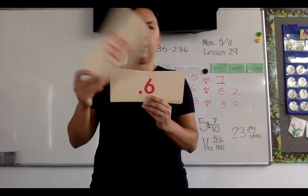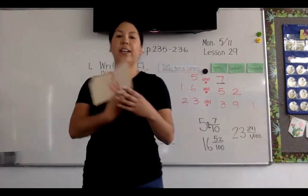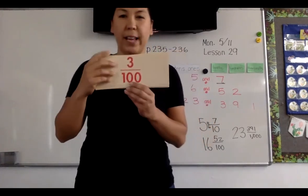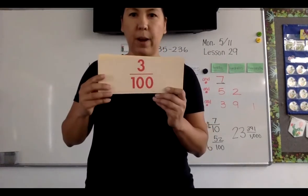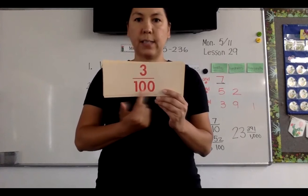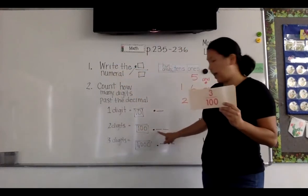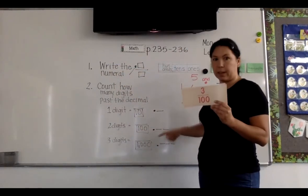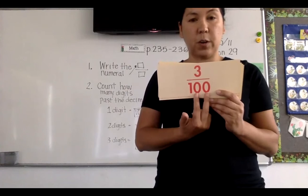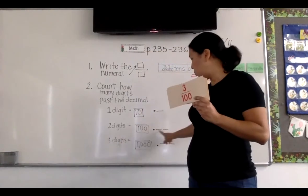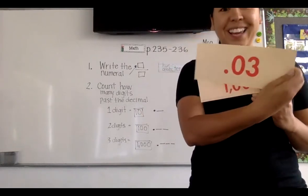Oh, this is tricky: two hundredths. Are you ready to try something more challenging? How would I write this as a decimal? There are two zeros, so we know it's going to have two digits past the decimal. It can't just be point three because of the two zeros — that means I have to have two digits past the decimal. Point zero three.